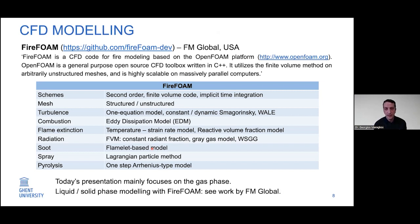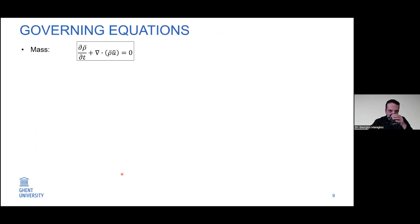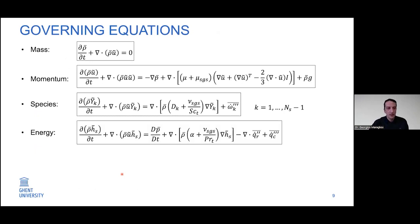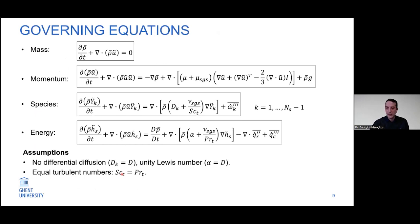Today's presentation focuses on the gas phase. When it comes to the governing equations, we typically solve for mass, momentum, species transport, and conservation of sensible enthalpy. The assumptions typically used are: we neglect differential diffusion so all species have the same diffusivity, we consider a unity Lewis number meaning the diffusion term in both the species and energy equations is the same, and we consider equal turbulent numbers — the turbulent Schmidt number is taken equal to the turbulent Prandtl number.